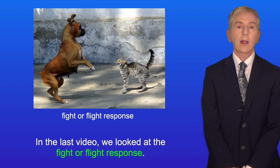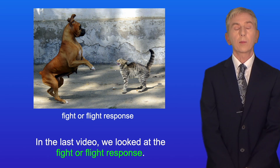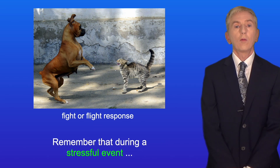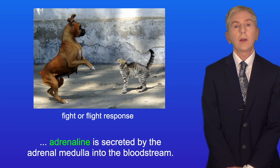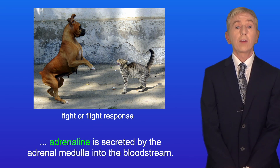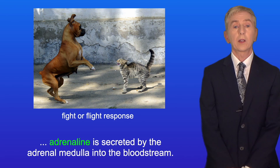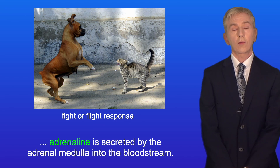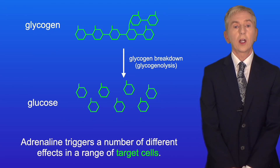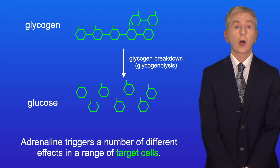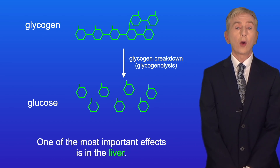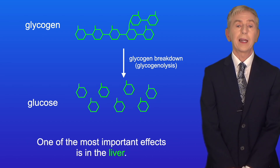In the last video we looked at the fight or flight response. Remember that during a stressful event adrenaline is secreted by the adrenal medulla into the bloodstream. Now adrenaline triggers a number of different effects in a range of target cells, and one of the most important effects is in the liver.